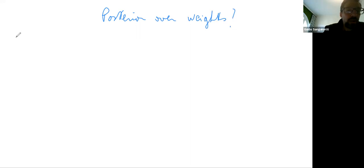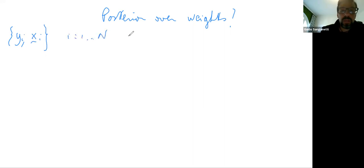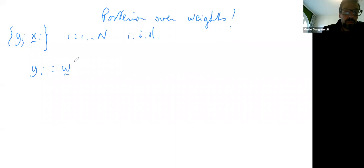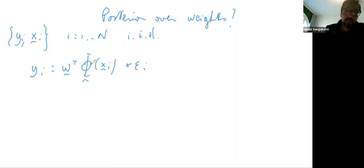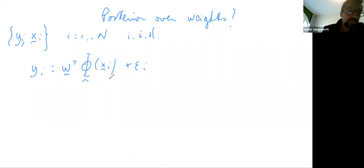The situation is: I'll have a set of i.i.d. observations y_i of x_i, for i equals 1 to n, independent and identically distributed. And I'll have my regression equation: y_i = w^T phi(x_i) plus epsilon_i. Now all the calculations go through exactly as in linear regression, except that instead of having x you have phi(x). So we want to compute the posterior over w given the data.